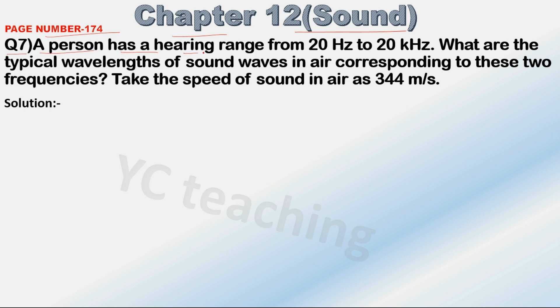A person has a hearing range from 20 Hz to 20 kHz. What are the typical wavelengths of sound waves in air corresponding to these two frequencies? We have to find the wavelength of these two frequencies, and we can take the speed of sound in air as 344 meters per second.